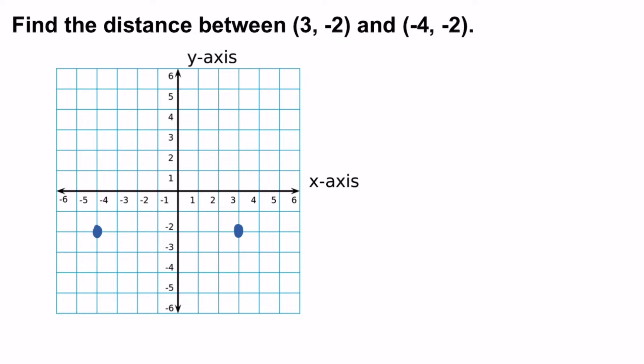And put a dot. To find the distance, I'm going to count from one dot to the next. So I'm going to start here at the left, at negative 4, negative 2, and then go to 3, negative 2. So this is 1, 2, 3, 4, 5, 6, 7. So the distance between 3, negative 2, and negative 4, negative 2, is 7 units.